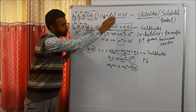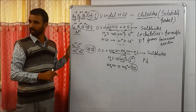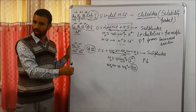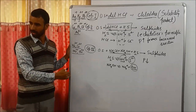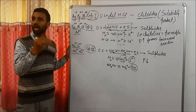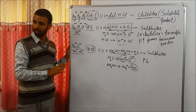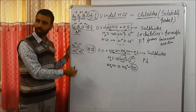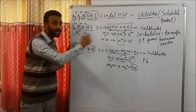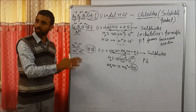So the precipitation involves chlorides in group 1, sulfides in groups 2 and 4, and hydroxides in group 3. In group 3, we add solid ammonium chloride and then ammonium hydroxide — meaning hydroxides of group 3 have low solubility. In group 5, we add ammonium hydroxide in excess and then ammonium carbonate, meaning carbonates of group 5 have low solubility product.